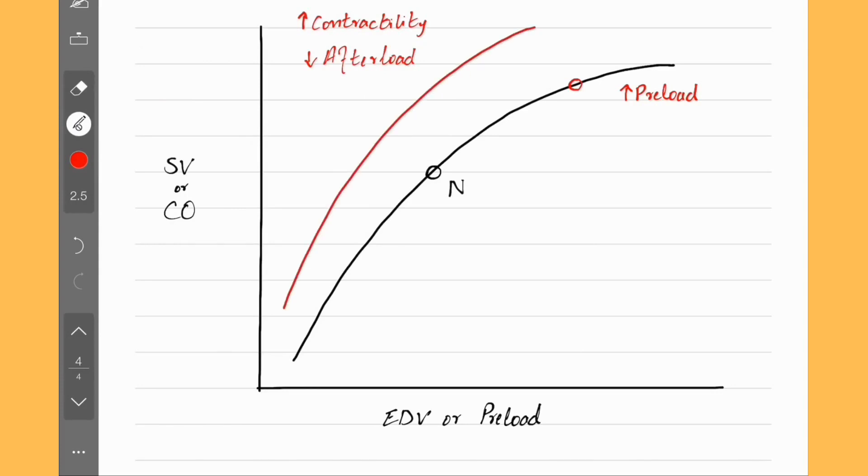The opposite is also true. Decreasing the preload means less blood in so less blood will be pumped out. With weak contraction or increased afterload, the curve is shifted downwards, meaning less blood pumped out.